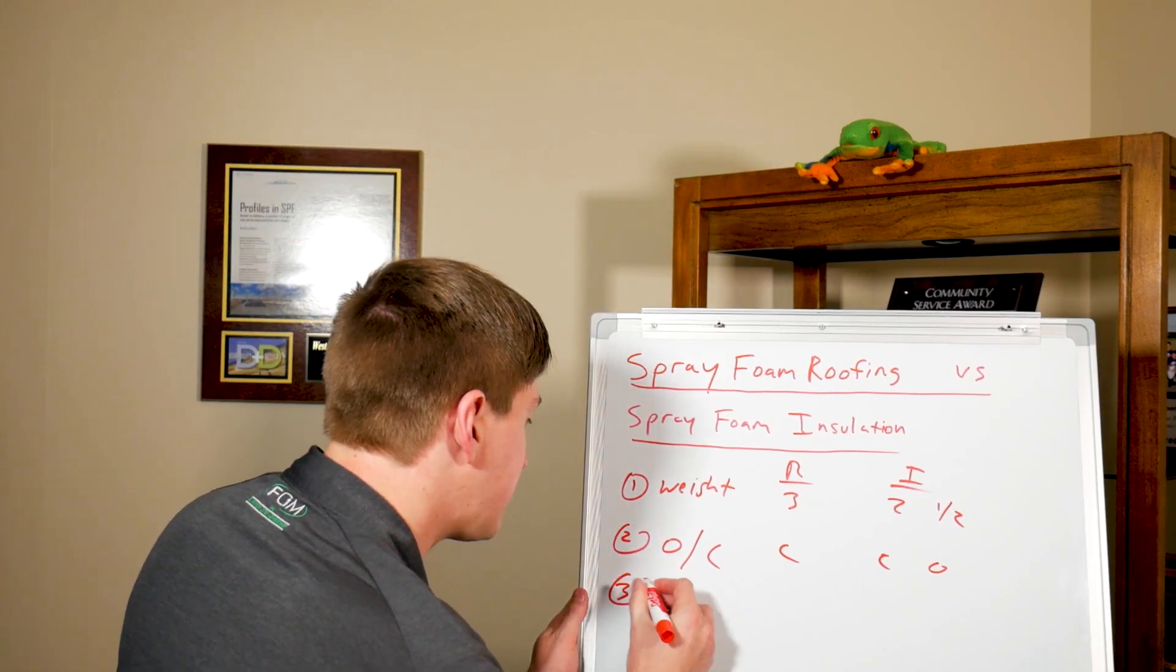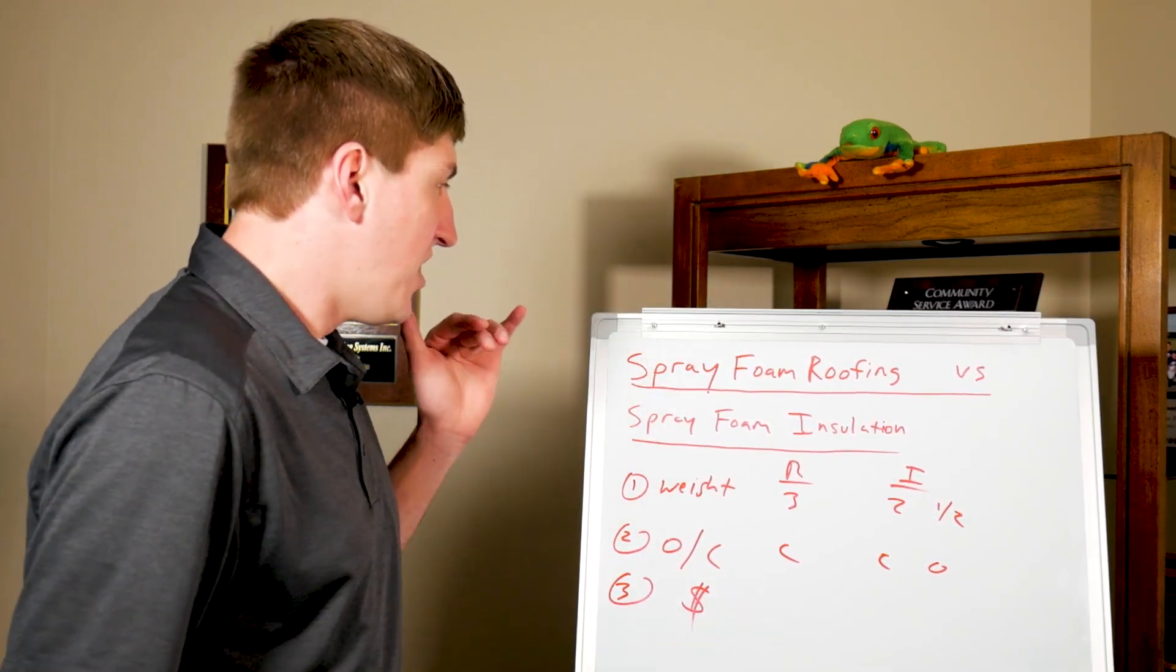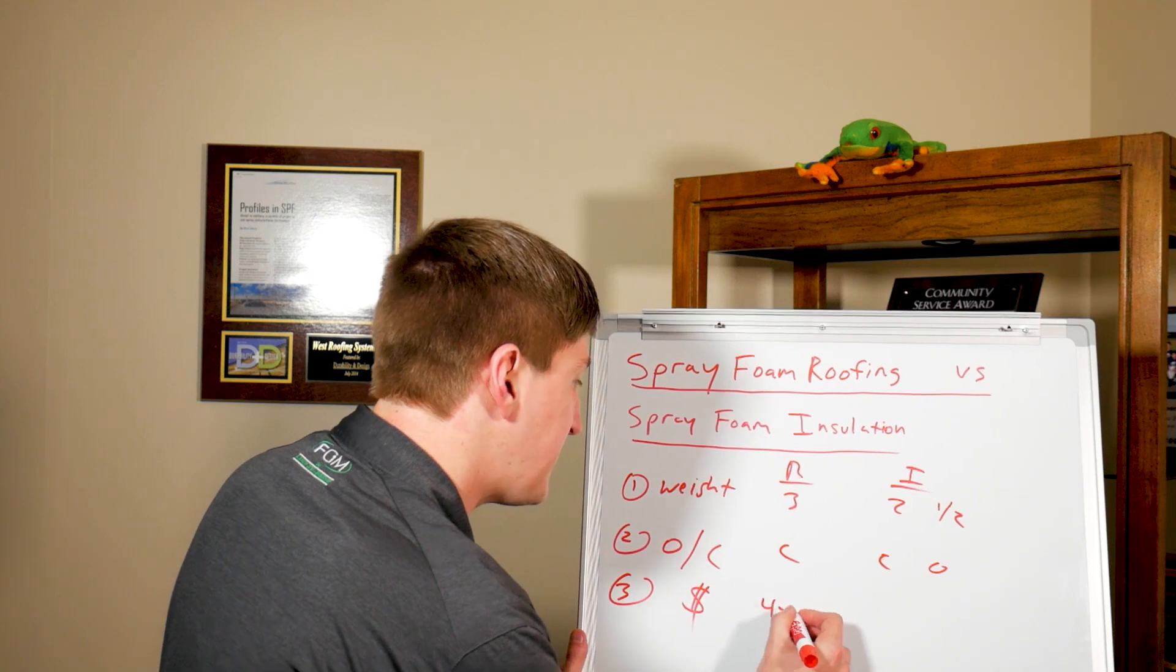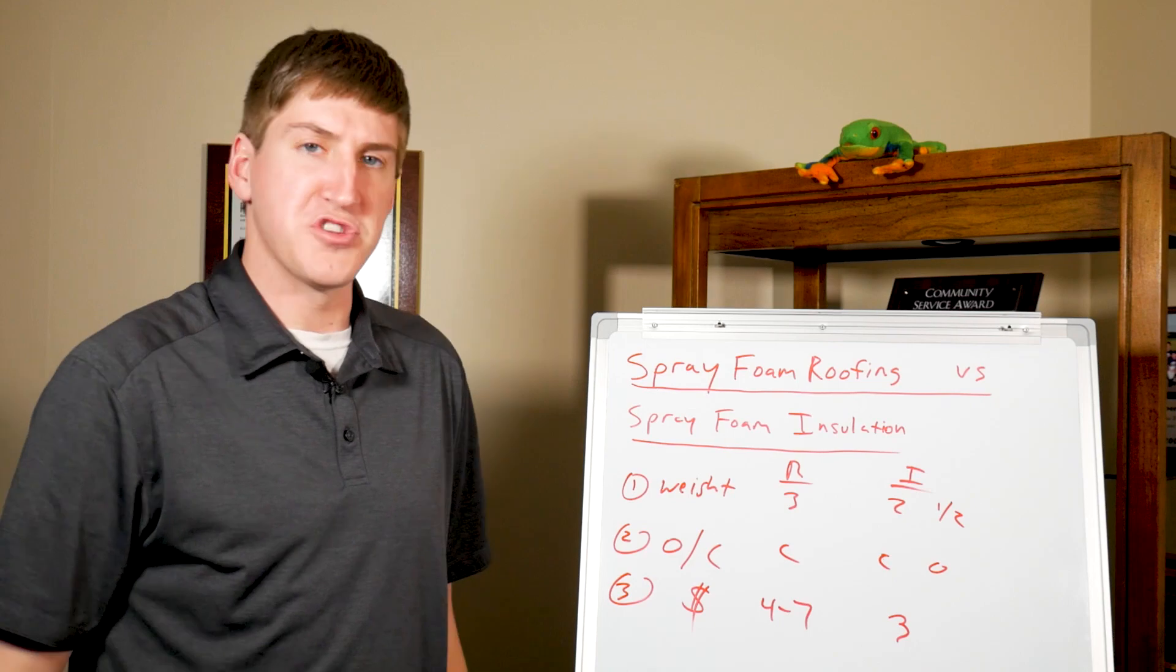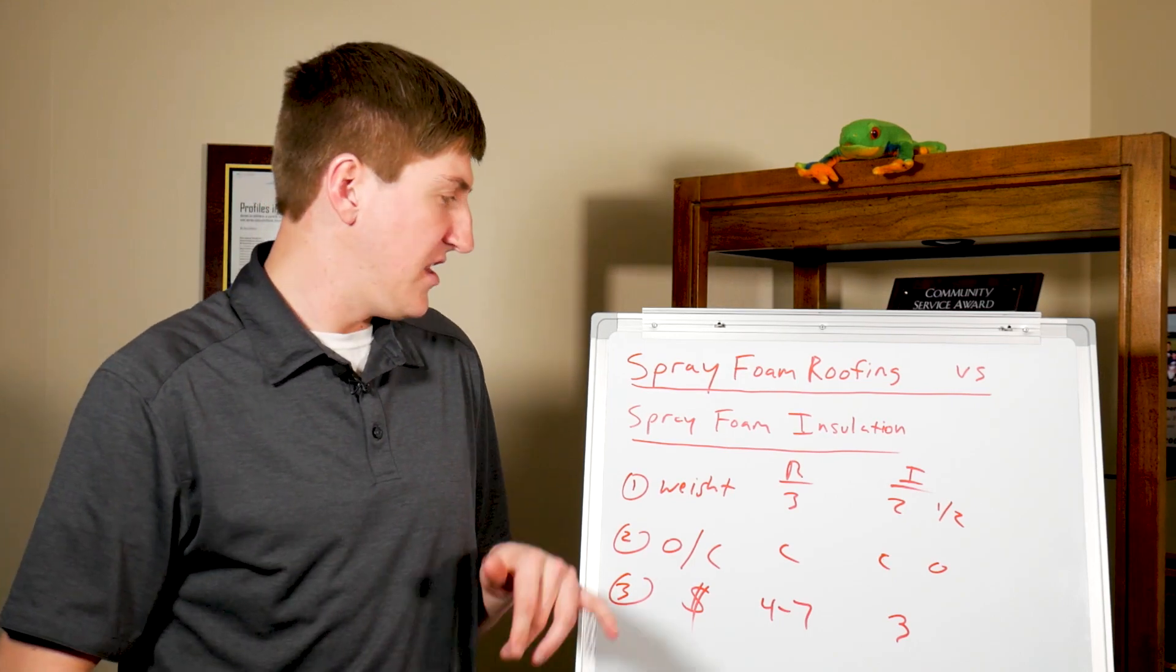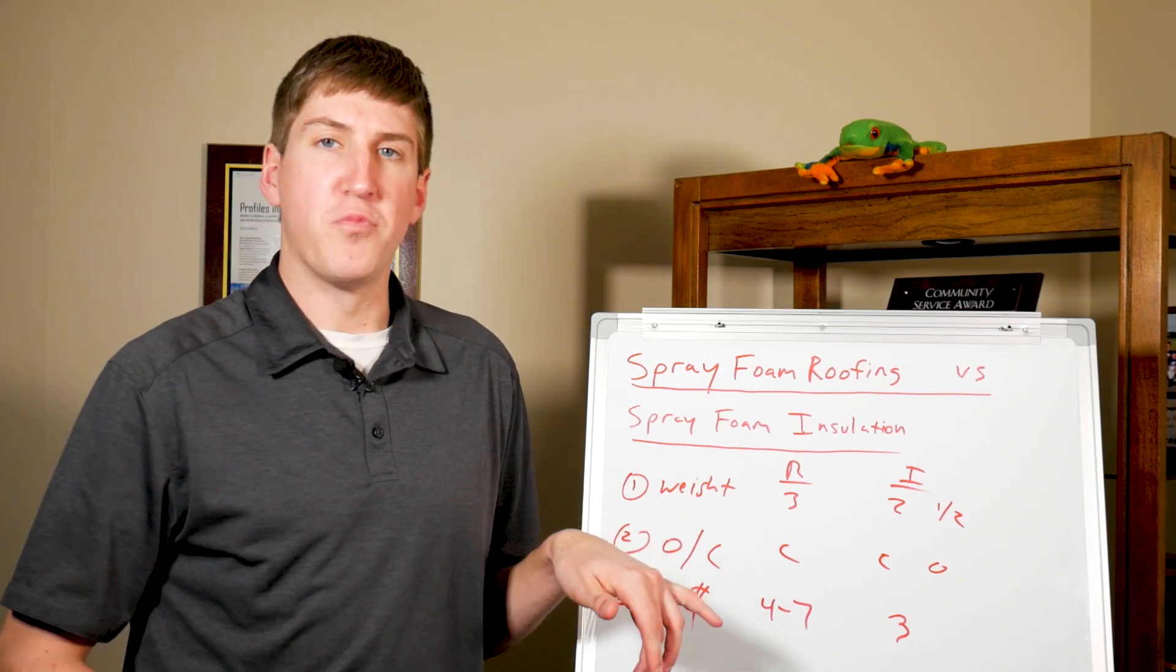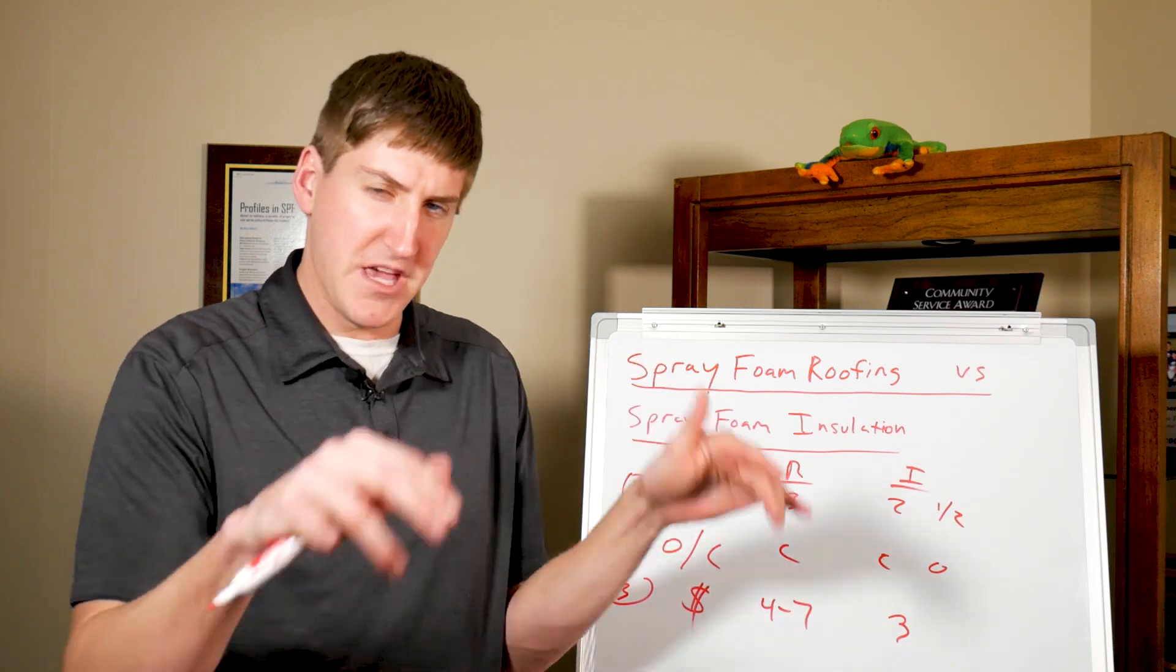The third thing is cost. Spray foam roofing is about four to seven dollars per square foot and insulation is about three dollars per square foot. And really the reason is three pound foam requires more product to make the same size.